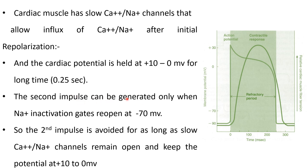The second impulse can be generated only when sodium inactivation gates reopen at minus 70 millivolts. The second impulse is avoided for as long as slow calcium-sodium channels remain open and keep the potential at 0 to plus 10 millivolts. This is the mechanism of production of the refractory period of the heart.